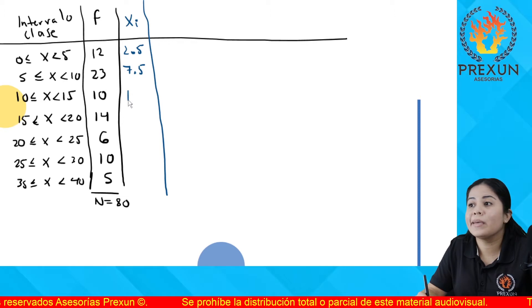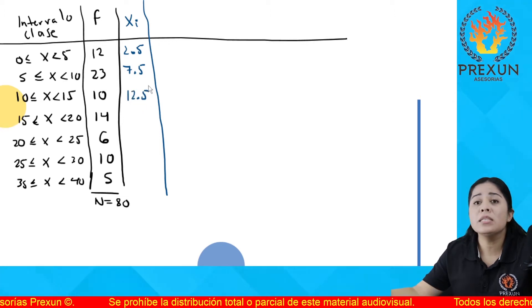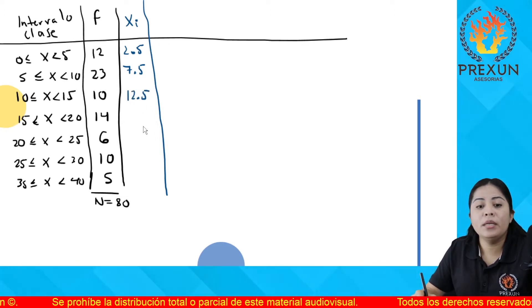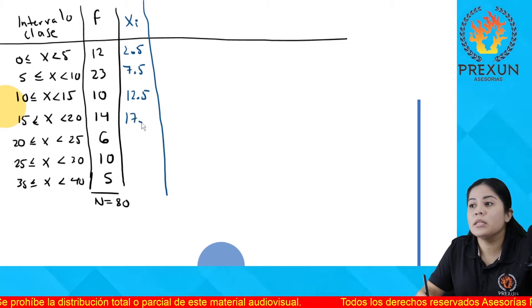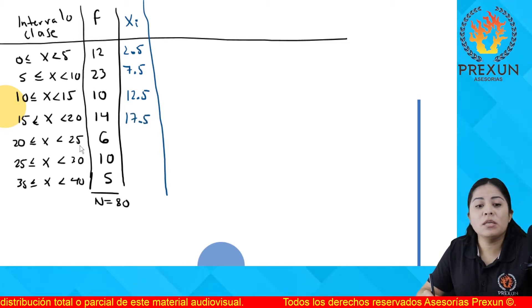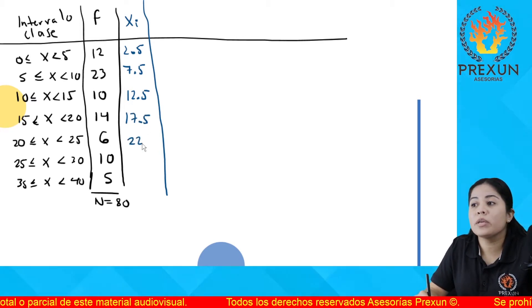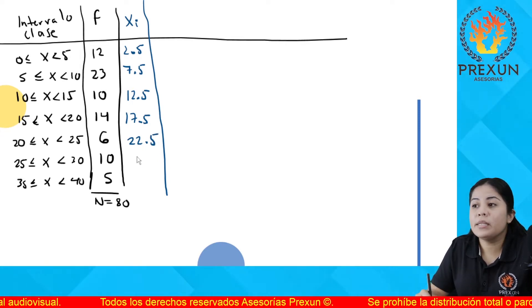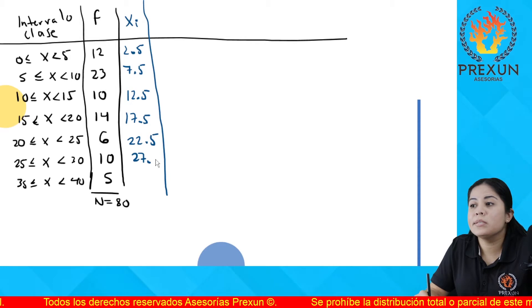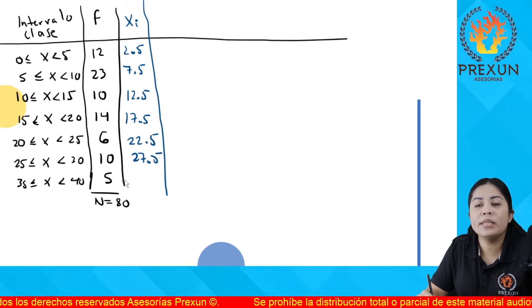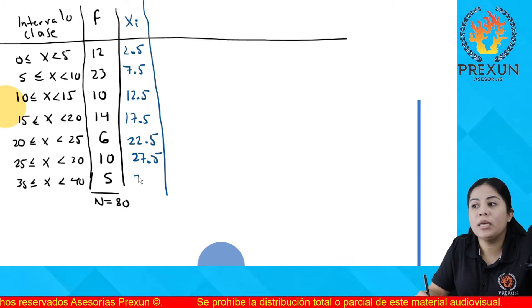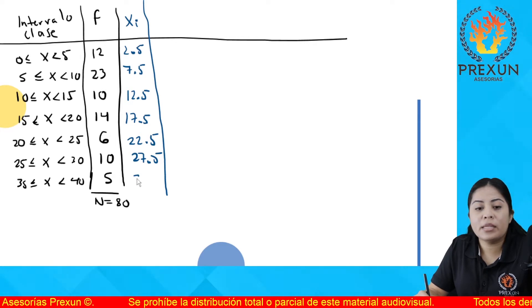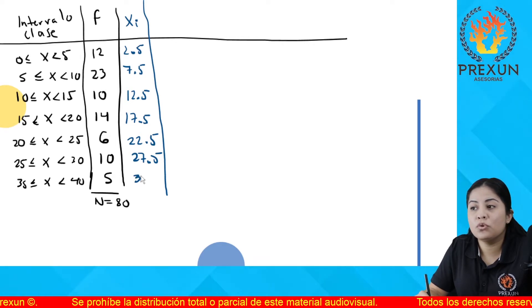15 más 20, al dividir entre 2 es 17.5. 20 más 25, al dividir entre 2 es 22.5. La que sigue, 25 más 30, al dividir entre 2 es 27.5. Y 30 más 35, al dividir entre 2 es de 37.5.